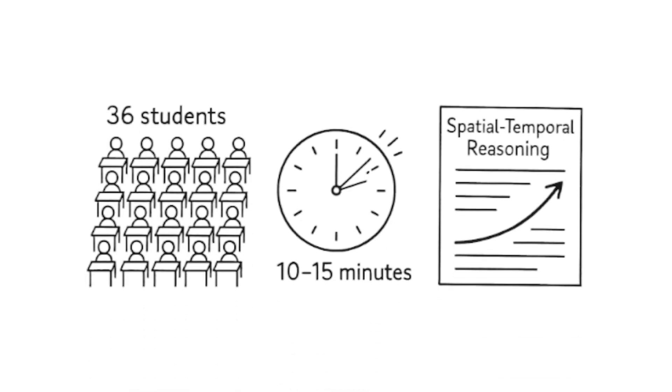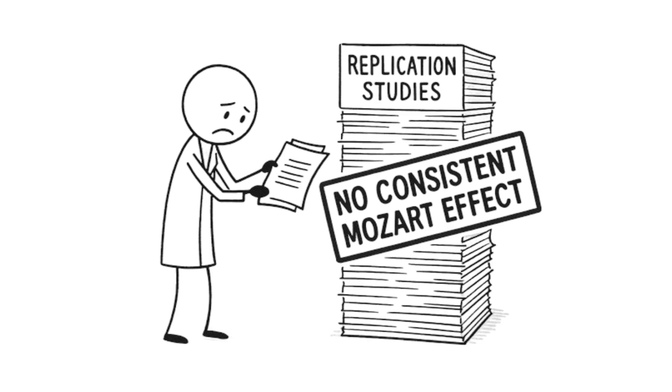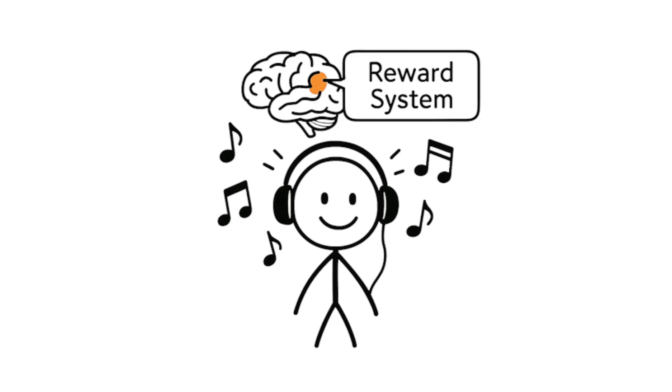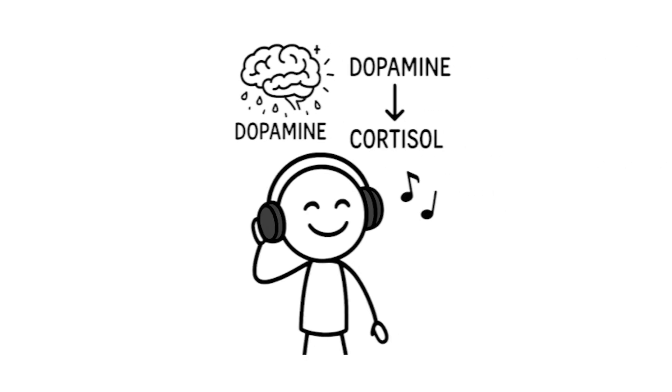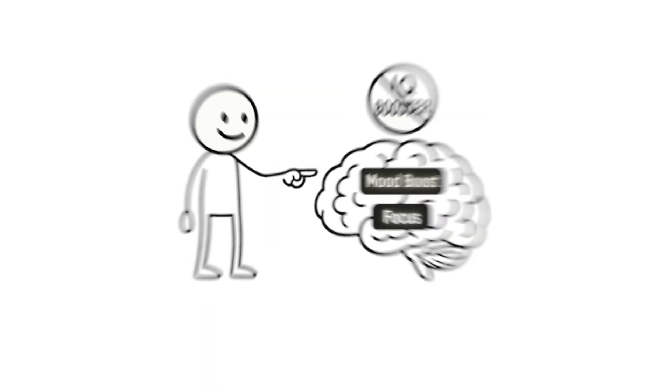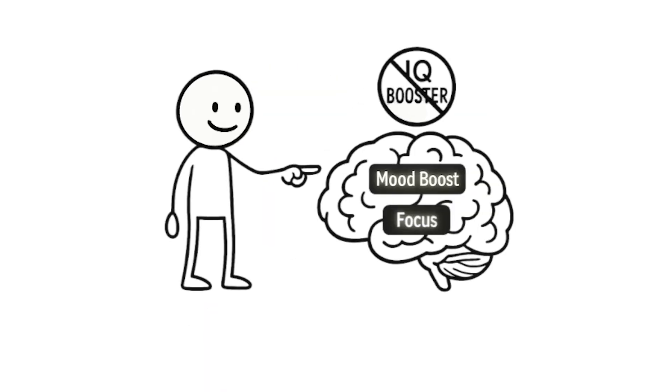The original study by Rauscher and Shaw was actually quite limited. It involved just 36 college students, the effect lasted only 10 to 15 minutes, and it only improved one specific type of spatial-temporal reasoning. Later, meta-analyses examining dozens of replication attempts found no consistent Mozart effect. What neuroscience research reveals is that music activates the brain's reward system, releasing dopamine and reducing cortisol levels, which can improve mood and focus, the real mechanism behind any temporary cognitive benefits.